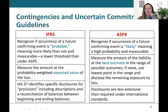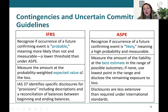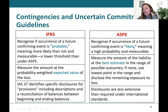To recap commitments and contingencies: under IFRS, you recognize a provision if the occurrence of a future event is probable — meaning more likely than not — and measure it at the probability-weighted expected value. So if there's a 10% chance of one outcome and 90% chance of another, you weight accordingly. Under ASPE, you recognize if it's likely and measure at your best estimate. IFRS generally requires more disclosure than ASPE.